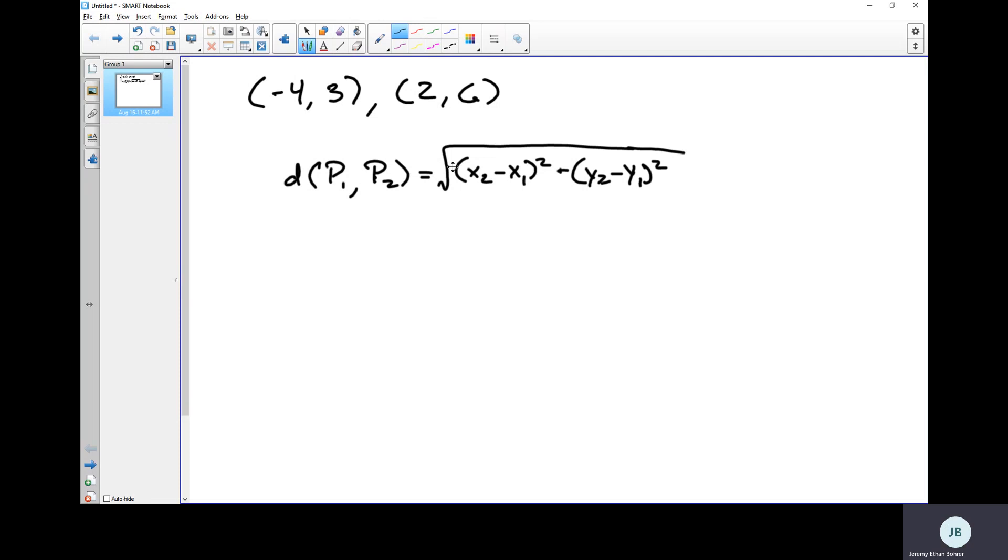We'll call this point 1, (-4, 3), so that makes -4 equal to x1 and 3 is y1. And then that makes (2, 6) point 2, so 2 is x2 and 6 is y2.